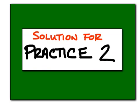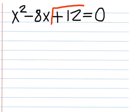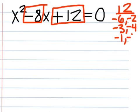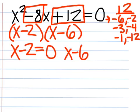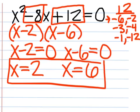For the practice problem, we have x squared minus 8x plus 12. We're going to look for factors of positive 12 that add to give us negative 8. A negative times a negative will be a positive. The factors are negative 6 and negative 2, negative 3 and negative 4, negative 1 and negative 12. Negative 6 and negative 2 add to give us negative 8, so we have x minus 2 and x minus 6. Setting equal to 0 and solving: x equals positive 2 and x equals positive 6. That is our final answer.